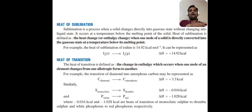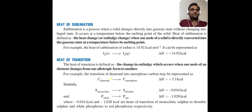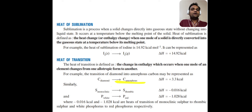Allotropy is a phenomenon in which a substance can exist in more than one physical state. For example, carbon can exist as diamond — diamond is an allotrope of carbon — and carbon can also be amorphous. The conversion of carbon diamond into carbon amorphous has a delta H value of plus 3.3 kilocalories. So that delta H is the heat of transition.